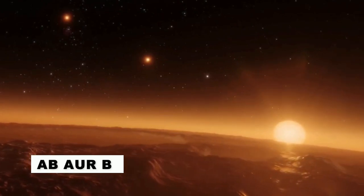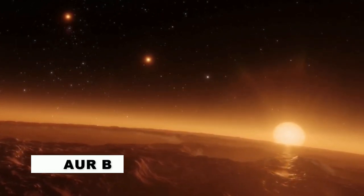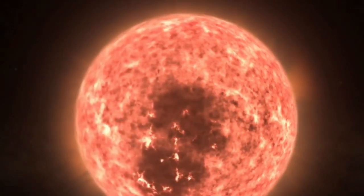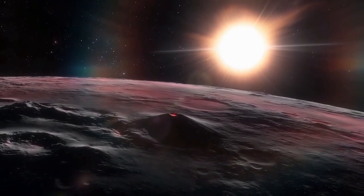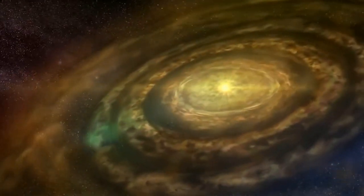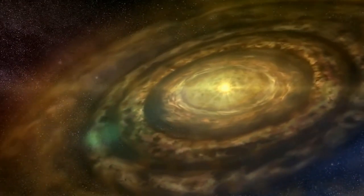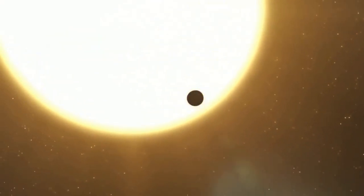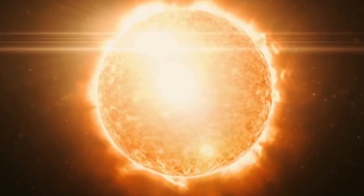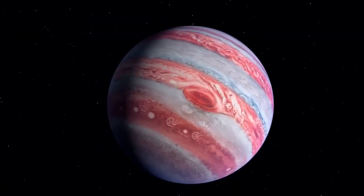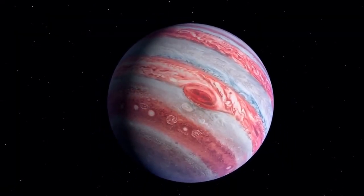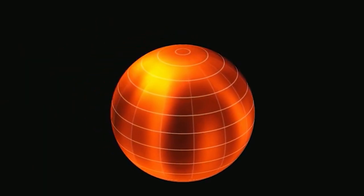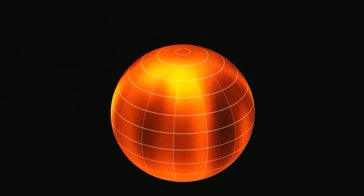One of the largest is AB Aurigae b. It's near the maximum size required to be classified as a planet instead of a brown dwarf, a body midway between a planet and a star. This planet revolves around the sun at 93 times Earth's distance and 3 times that of Neptune's. Its formation deviates from the standard planetary formation hypothesis.